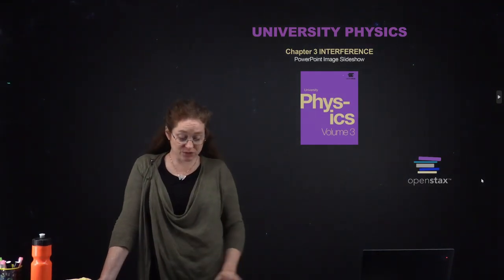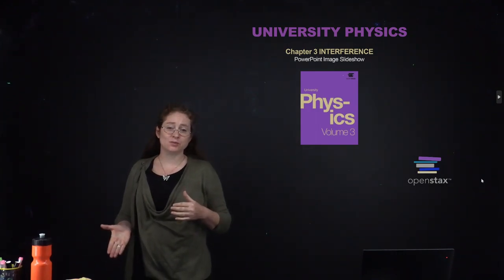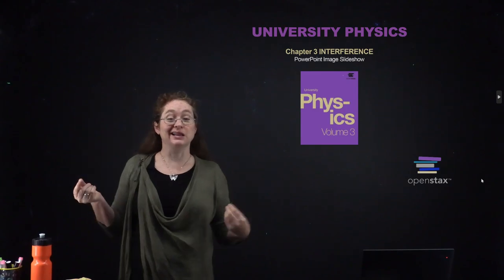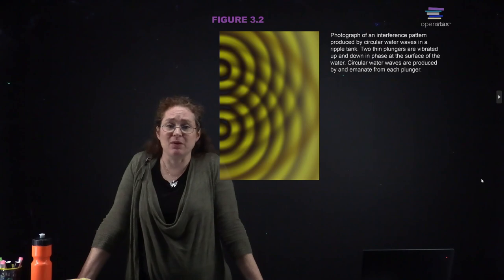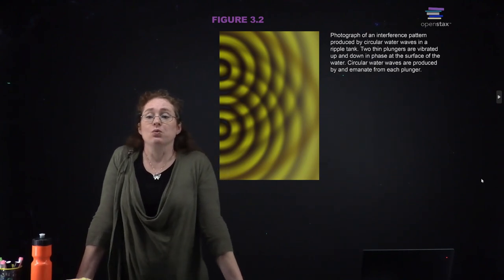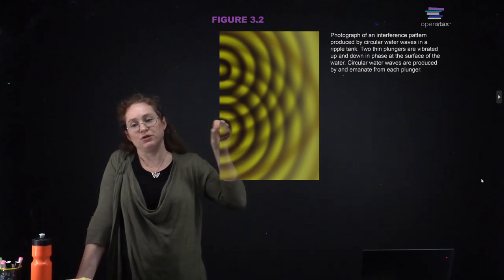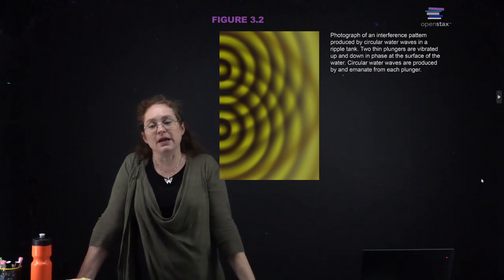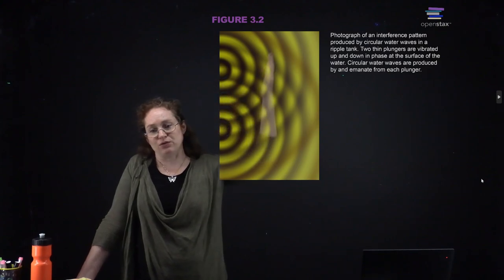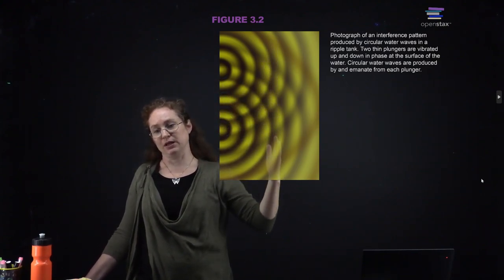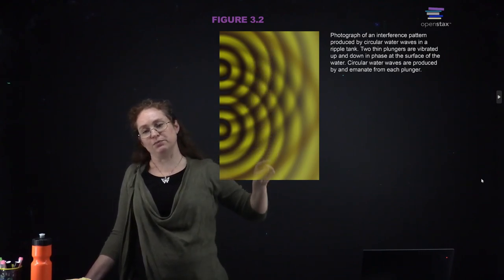Now we start talking about interference. We've touched on it last semester when we talked about mechanical waves, and now we're going to discuss it for electromagnetic waves. When we talked about mechanical waves, one example was waves in a ripple tank — water waves generated by a plunger going up and down. When you have two sources, they will interfere, so looking at the amplitude at some point, you see minima and maxima as a function of position.